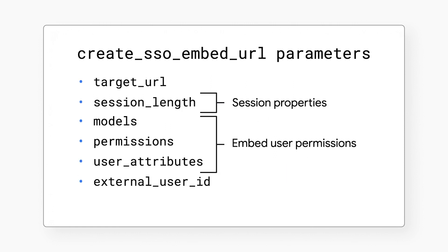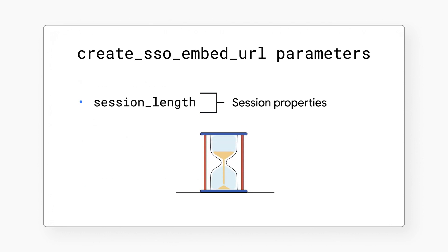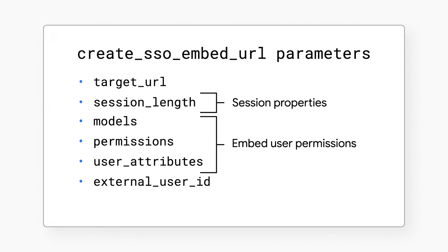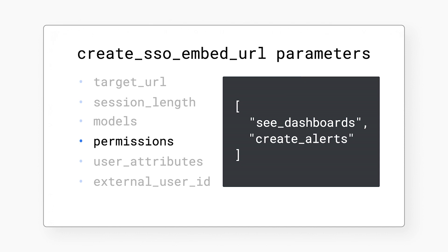The session property parameters define how the session behaves. For example, the session length parameter determines how long your user can stay logged in. The embed user permissions parameters are also required so your user can access and interact with your embedded content. The models parameter determines what models your user can access. The permissions parameter determines what your user can do in this session, like viewing a dashboard or creating an alert.